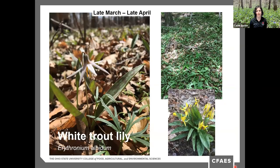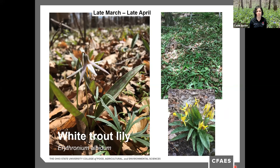White trout lily is in the lily family. Immature non-flowering plants have a single leaf while flowering plants have two leaves of unequal size. Those leaves can be mottled with green and brown and can form massive colonies. It can take up to eight years for these to flower, so I typically find just the leaves — when I find flowers I deem myself lucky. There's also a species in the same genus with a yellow flower called yellow trout lily, and I've been lucky enough to find both species growing in the same area at the same time.